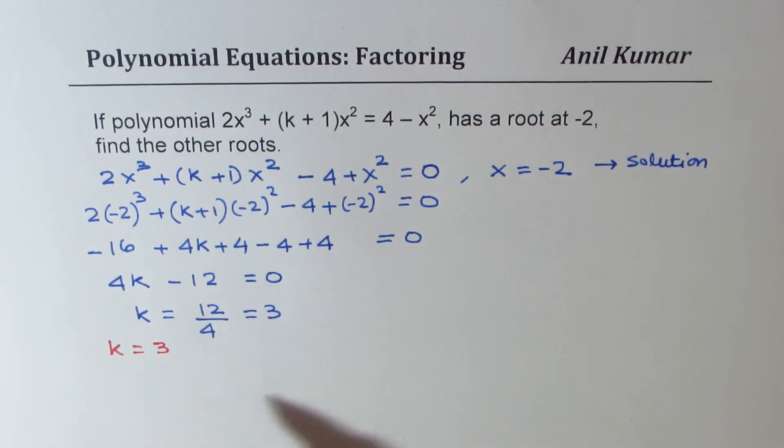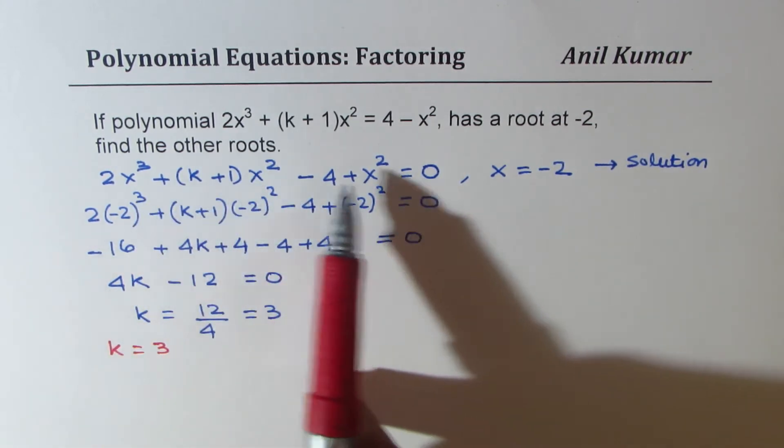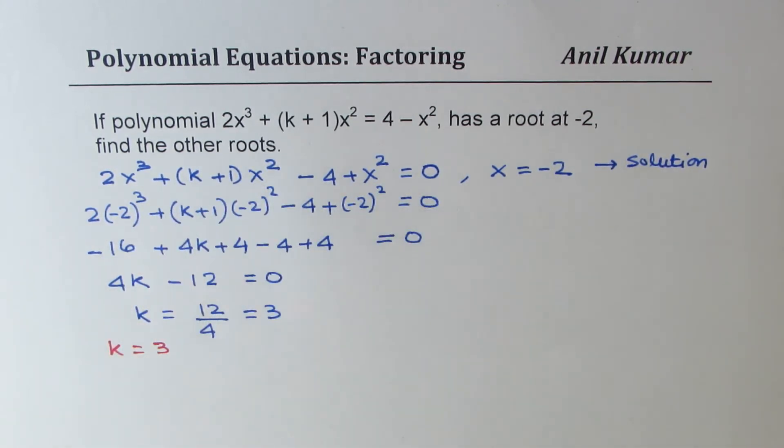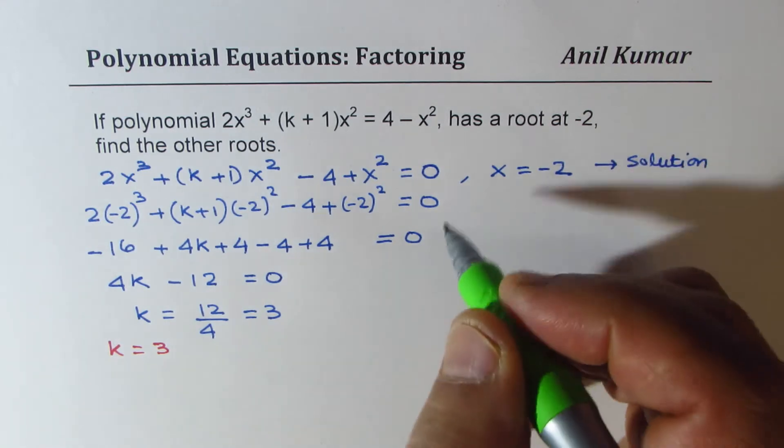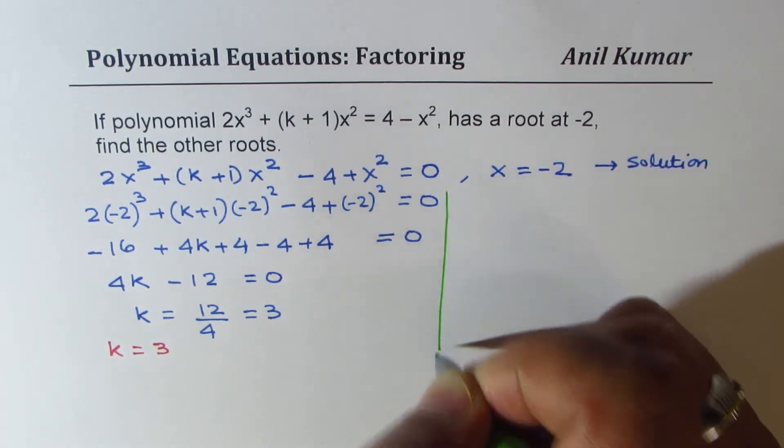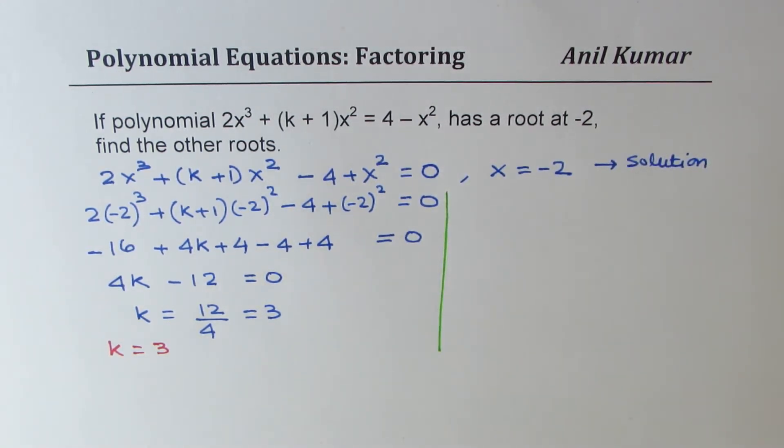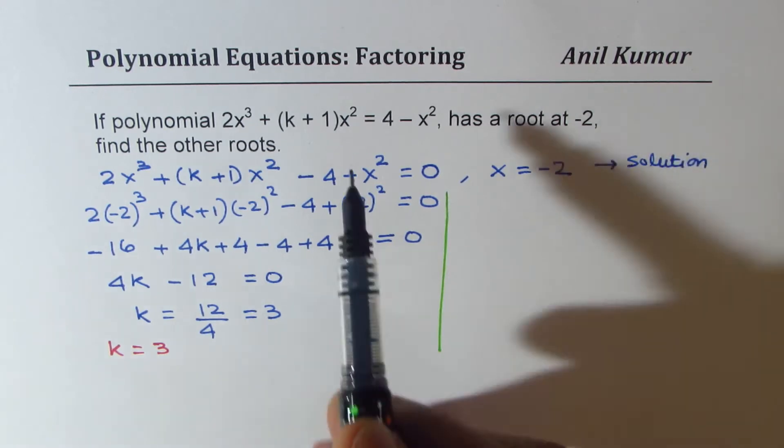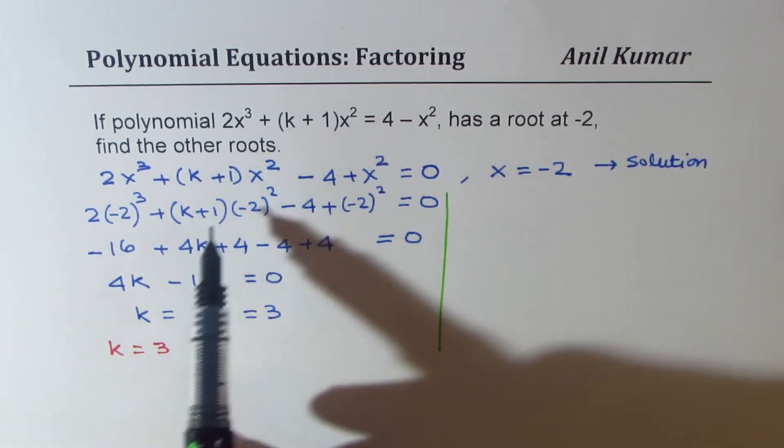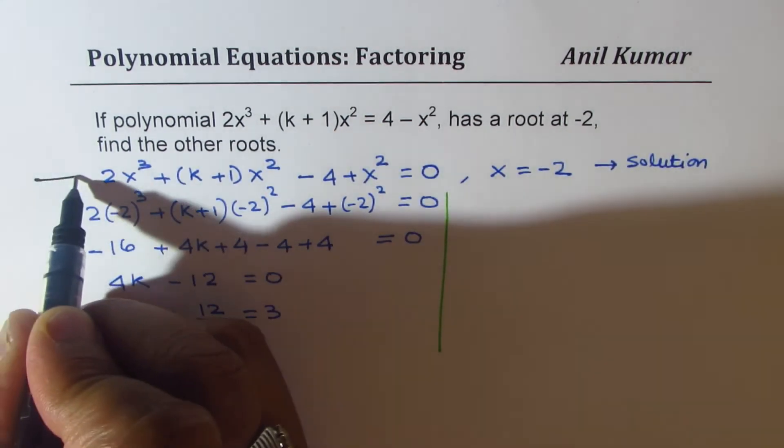Now, if k is equal to 3, I can rewrite the equation with k equals to 3. And then we can find the other roots. That's the whole idea. So let's do it. So I'll substitute k equals to 3 in this equation.